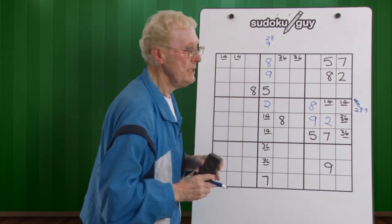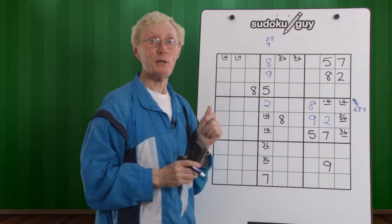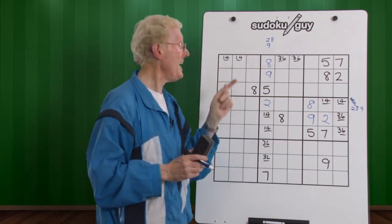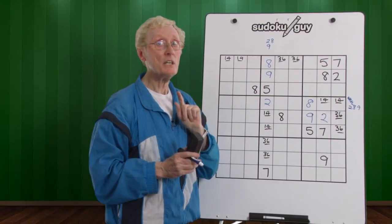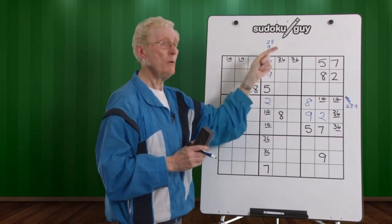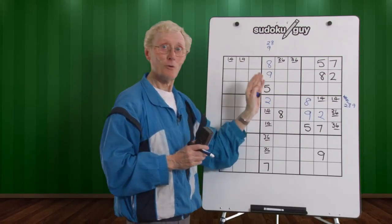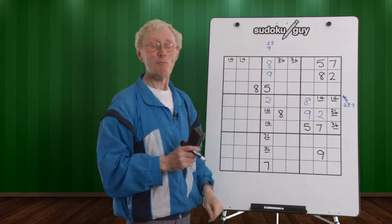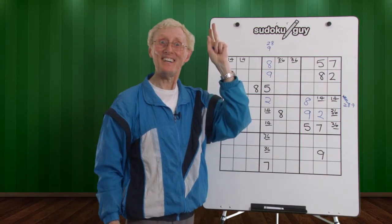So what I want to show you here, folks, is the power of double matching pairs. You can work out what the other numbers are very easily with a row, a column, or a block. So I'm off to play tennis. Bye for now.